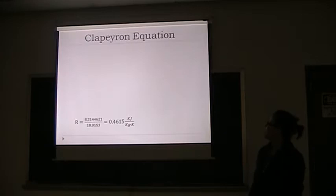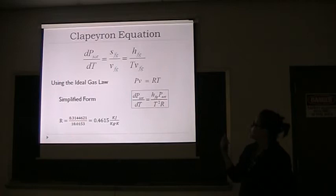The equation shows that dP/dT equals latent heat over temperature times the specific volume. Using the ideal gas law PV equals RT, we can simplify to dP/dT equals latent heat times pressure over T squared times the gas constant.